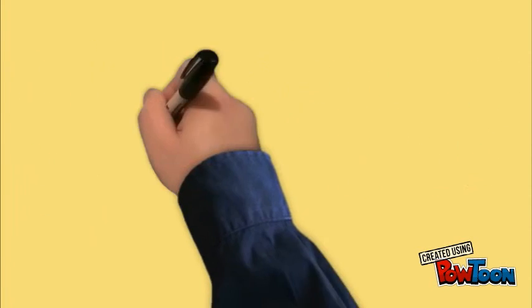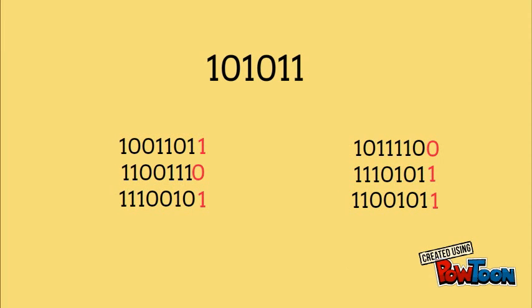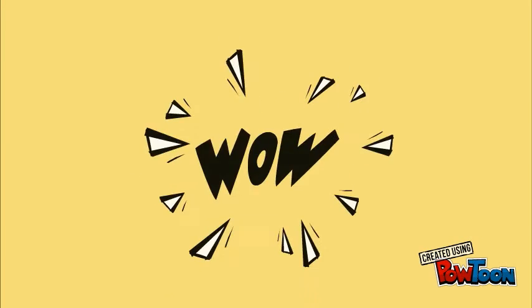Let's say we have to hide the following 6 bits of data in an image. We take 6 bytes of the image and change the least significant bit of each to match our data. Given that we are changing only the smallest bits in a large file, our actions will have an almost imperceptible effect.